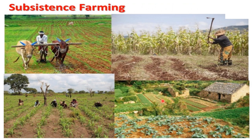In subsistence farming, land holdings are small and most of the work is done by manual labor or by using animals.